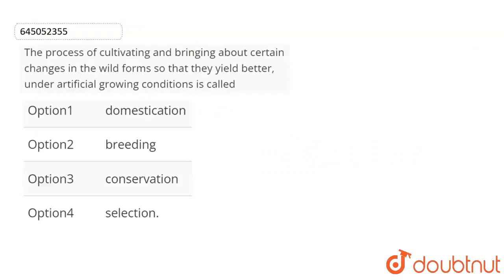The question is: the process of cultivation can bring about certain changes in wild form so that they yield better under artificial growing conditions. This question is asked about the process of cultivation on wild form — wild species can change.